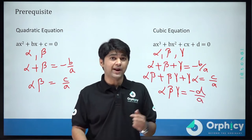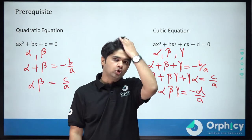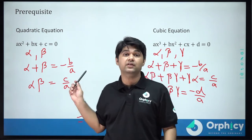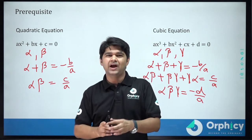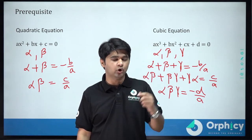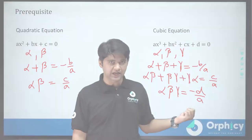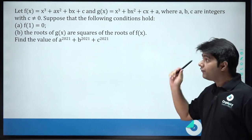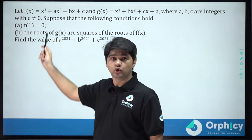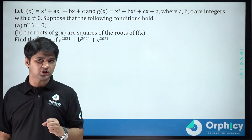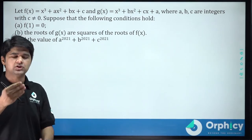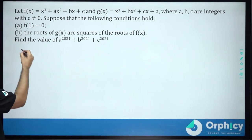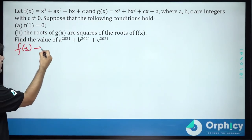This is the prerequisite required to solve this question. If you do not know how we reach these results or are confused regarding the derivation, please subscribe to our channel — I will be releasing a video on that soon. Our question says f(x) and g(x) are both cubic polynomials, and we are given that f(1) = 0, which means 1 is a root of f(x).